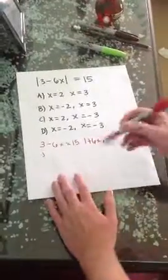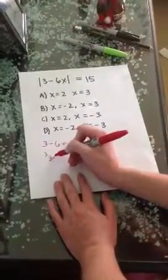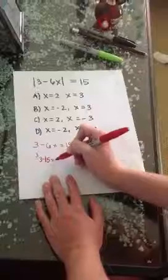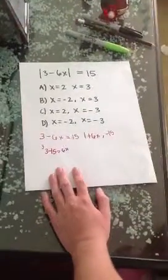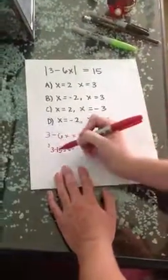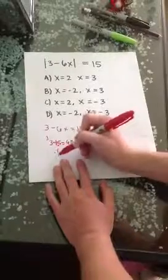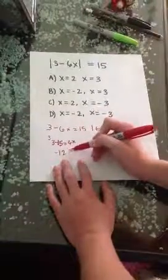With that, we're going to be given 3 minus 15 equals 6x. Now we're going to work this up on both sides. This is going to equal negative 12, and then that's going to equal 6x.